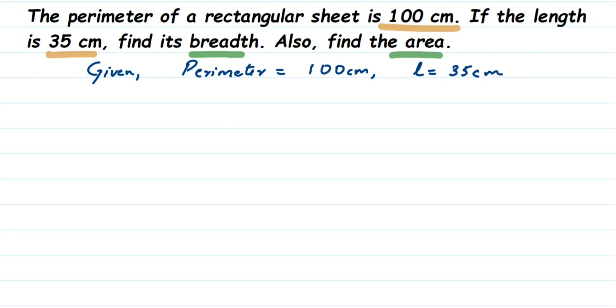Now, how to find out the breadth? We're going to use perimeter because that is given in the question. The perimeter of a rectangle is 2 into L plus B. In this formula I'm going to substitute everything we know.